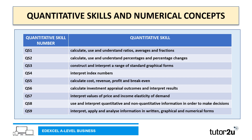And the final quantitative skill — quantitative skill 9 — is to interpret, apply and analyse information in written, graphical and numerical forms.